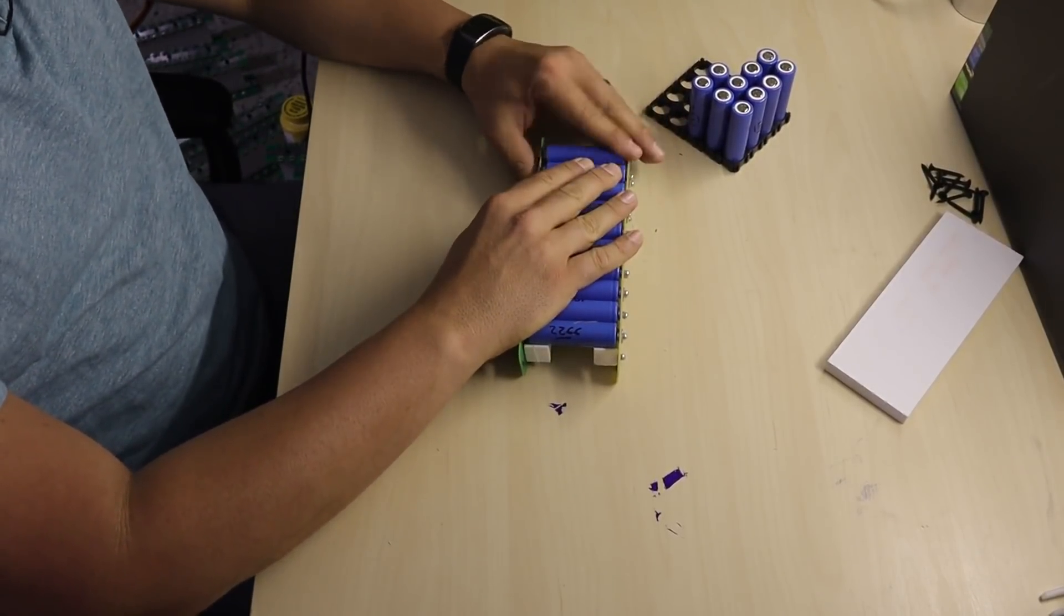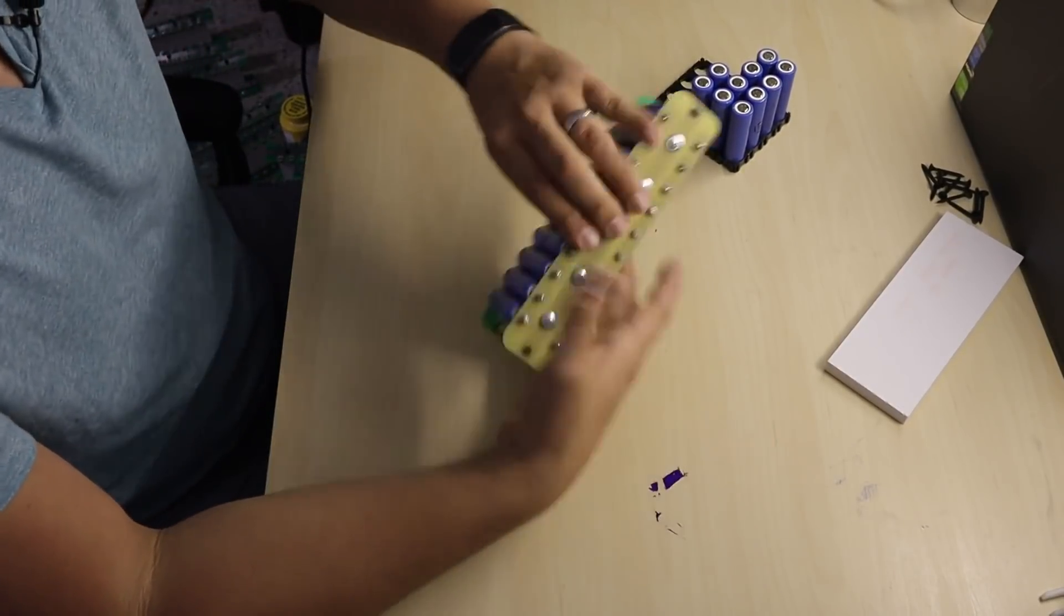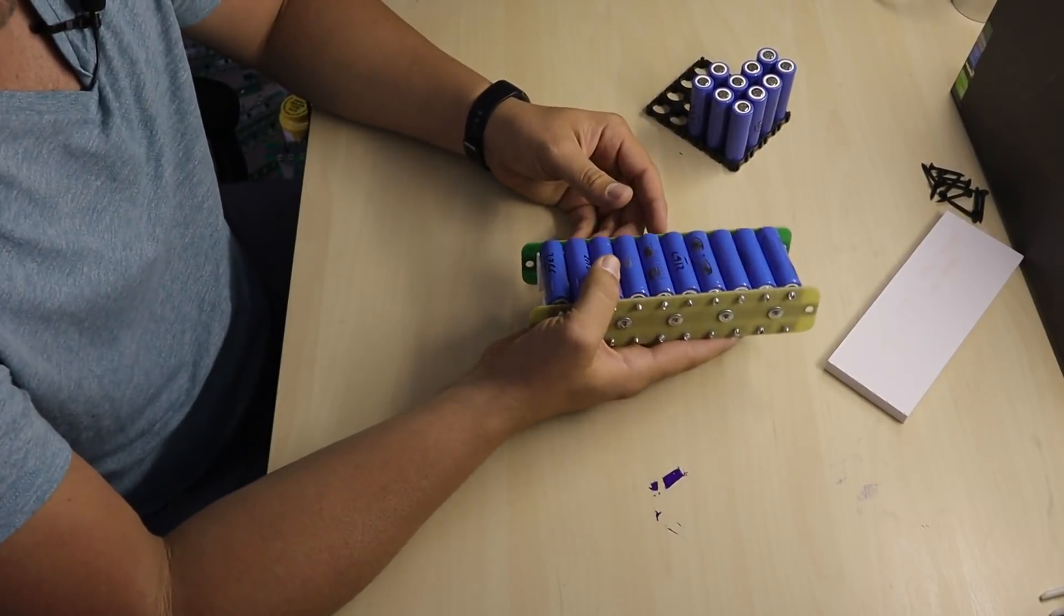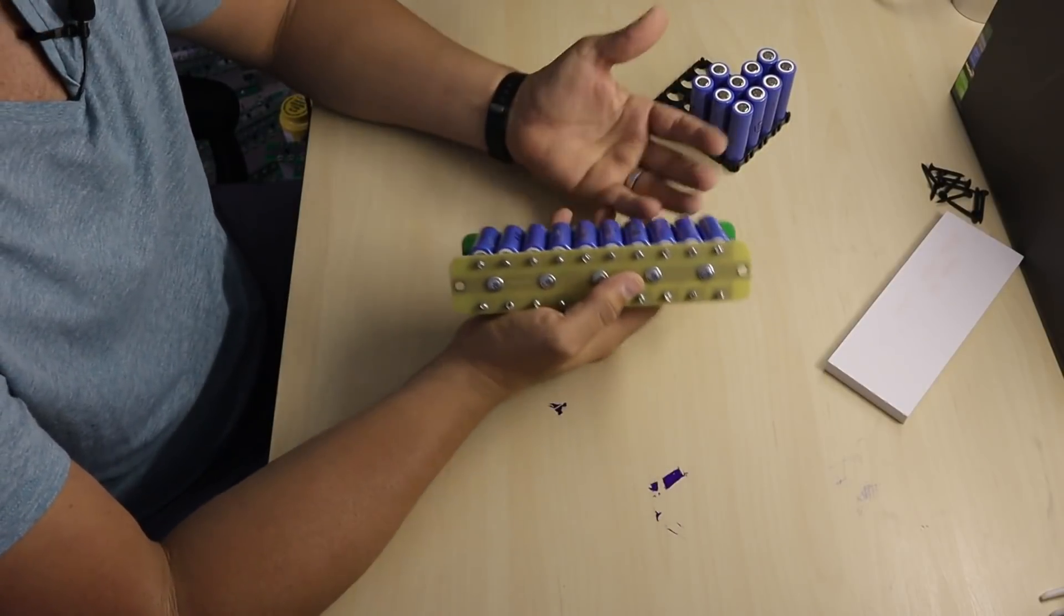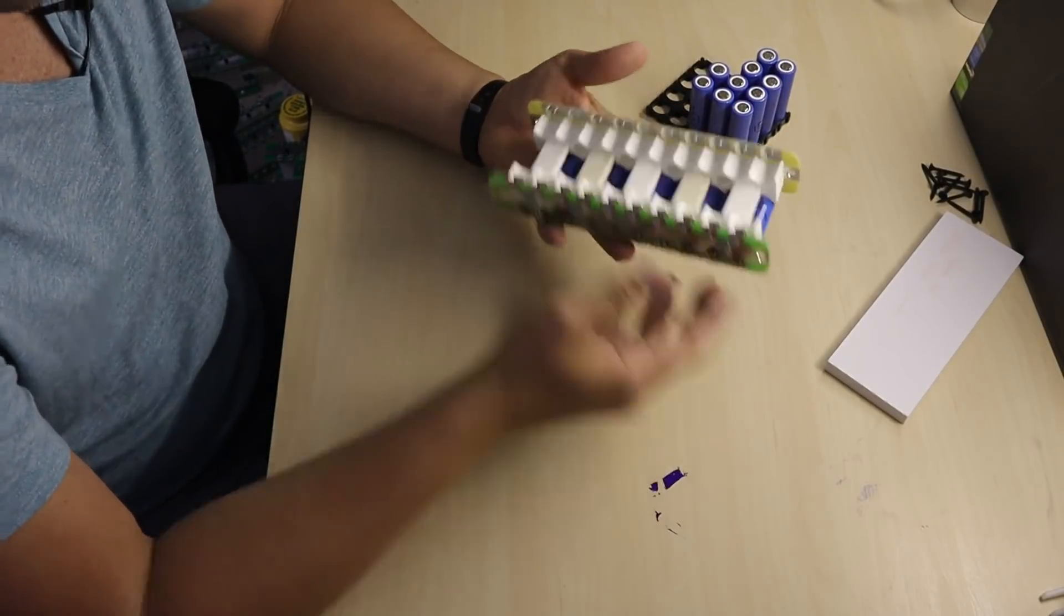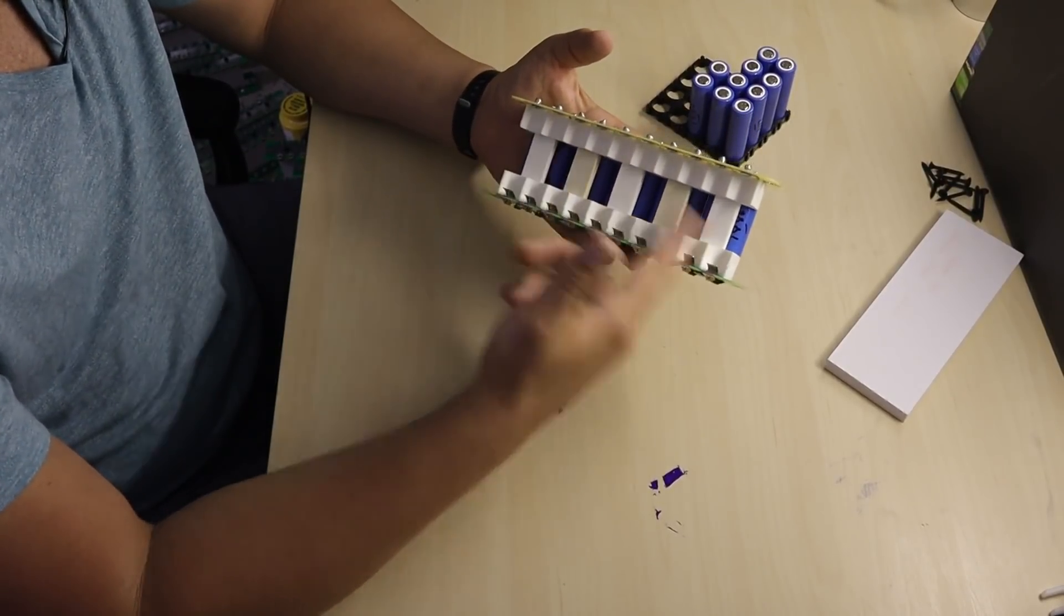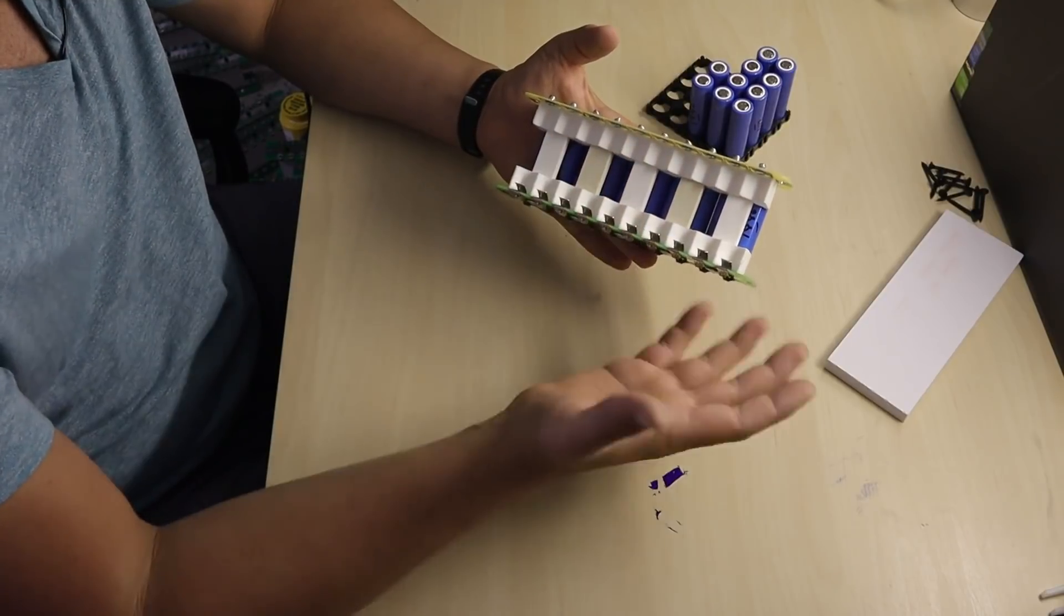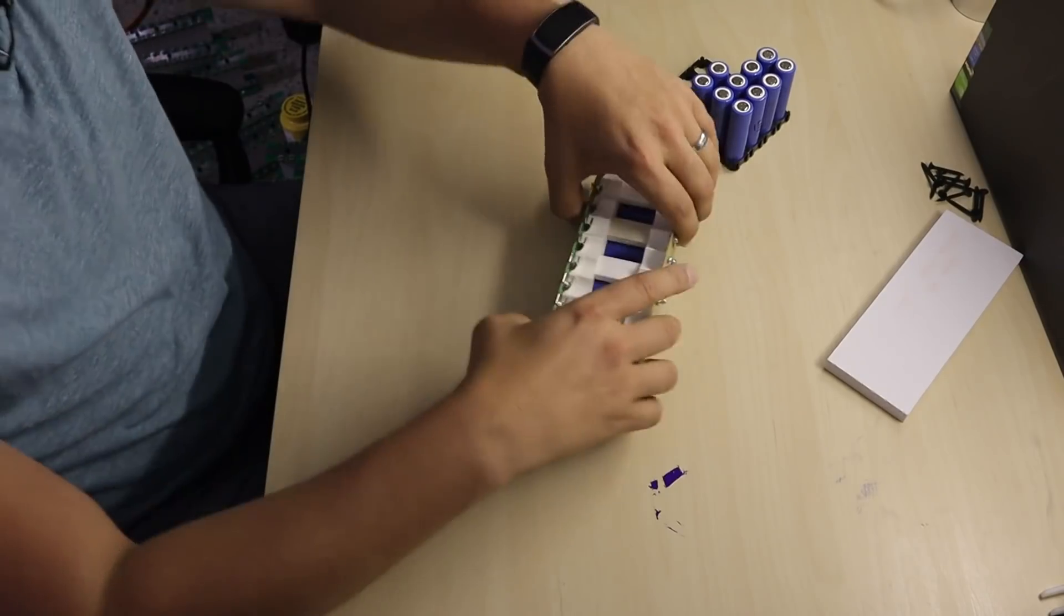Now what used to be easy and simple to do, which is a module for a battery pack, is now ten times easier and faster. As you saw, I just put ten batteries together in a module. This is how it looks. In the middle there's some gaps in between so the air flow passes through, keeping them cooler longer.